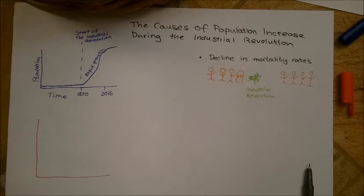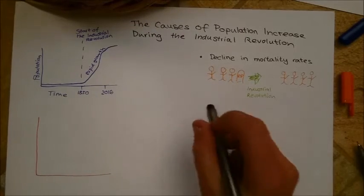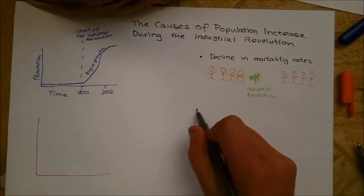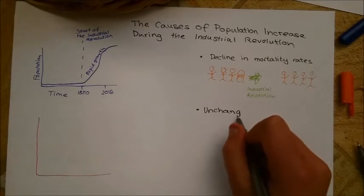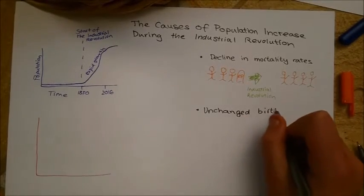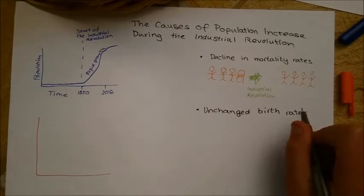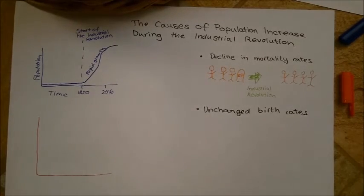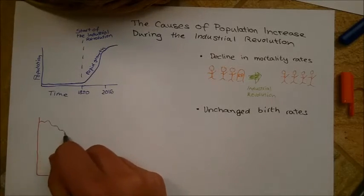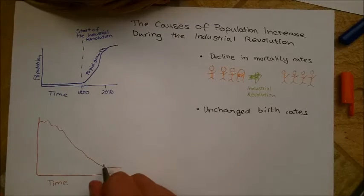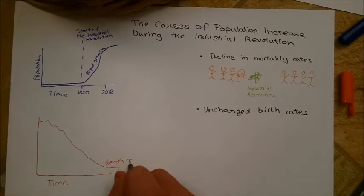But a decline in mortality rates alone is not sufficient to explain population increase. Population increase depends on two main variables, the mortality rates and the birth rates. If the birth rates, for instance, were to decrease along with the mortality rates, no significant change in population would have occurred.